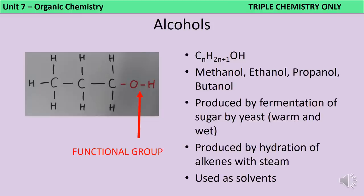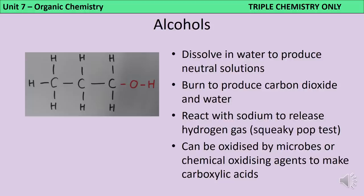Alcohols have the functional group OH, with general formula CₙH₂ₙ₊₁OH. The first four are methanol, ethanol, propanol and butanol. Ethanol is important as a solvent and reagent in chemical industry. It can be produced by fermenting sugar with yeast in warm, moist conditions, or by hydrating ethene using steam. Alcohols dissolve in water to give neutral solutions — the OH group remains covalently bonded to the molecule, so it doesn't ionise. Alcohols burn to produce CO₂ and water, and react with sodium to release hydrogen (squeaky pop test), though care is needed as alcohol is flammable.